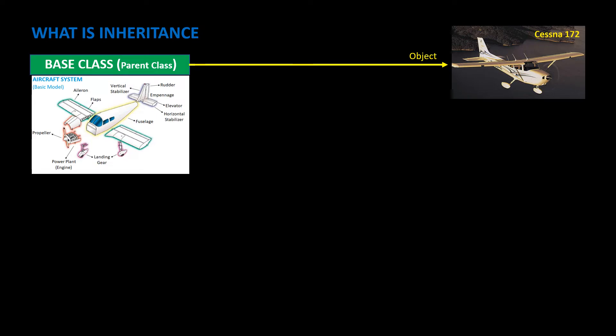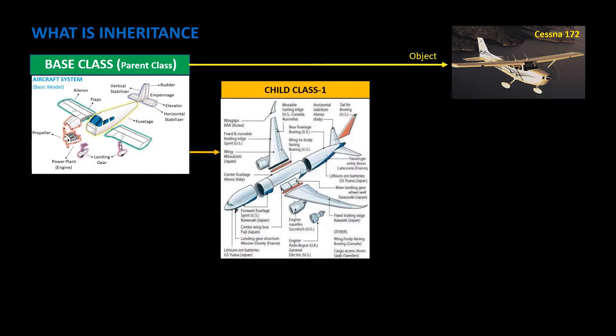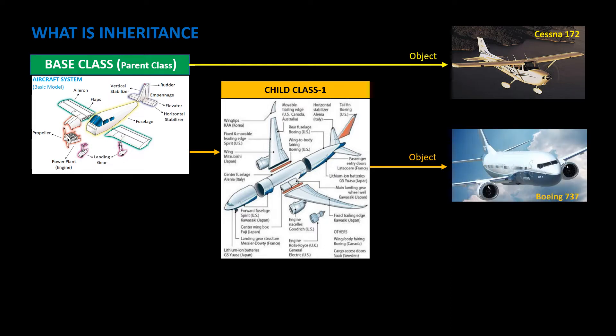Then we devise another plan which needs to facilitate passenger travel. This new plan is the child class 1, which needs all features of the basic aircraft system but also needs some additional advanced features. So the child class 1 inherits all features from its parent system or the base class and adds up its own as well. Based on this modified child class 1, we develop the object or real world passenger aircraft, the Boeing 737. This is inheritance.